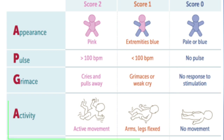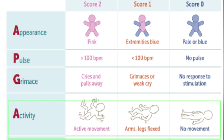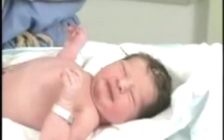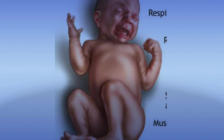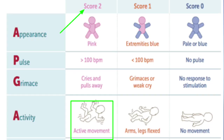The fourth parameter is A for Activity, which assesses muscle tone — specifically whether the baby maintains a well-flexed posture. If the baby maintains a well-flexed posture with active movements, the score is 2. If there is only some flexion of the extremities, the score is 1. If there are no movements and no response, the score is 0.